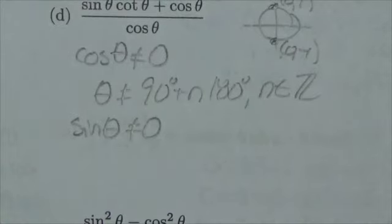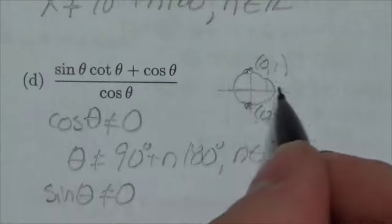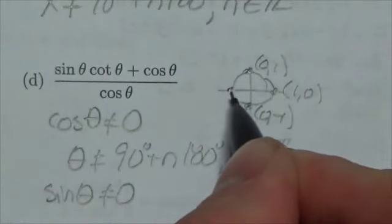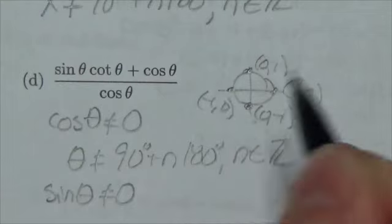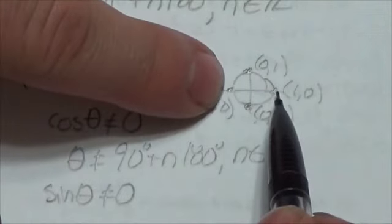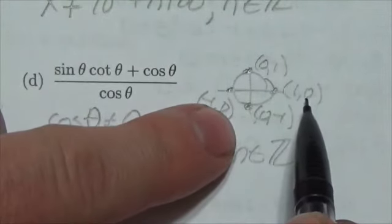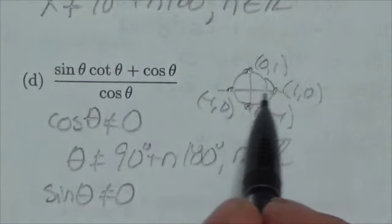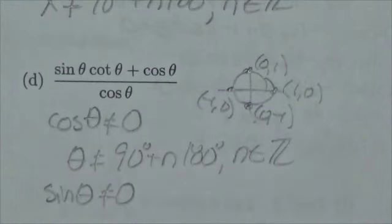Let's go back to our unit circle. Notice at these two points—1, 0, negative 1, 0—the sine ratio goes to zero, because sine is associated with the y-coordinates. That's at 0 and 180 degrees.